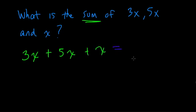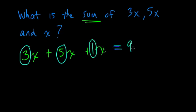And a quick way of doing this is just to add up the coefficients. And that means this number 3 plus 5, and when you have just an x, that's really a 1x. So in this case, it would be 9x.